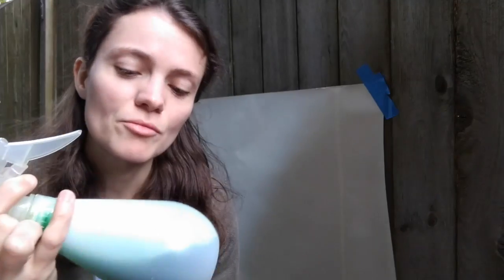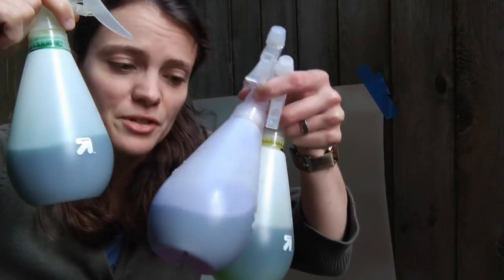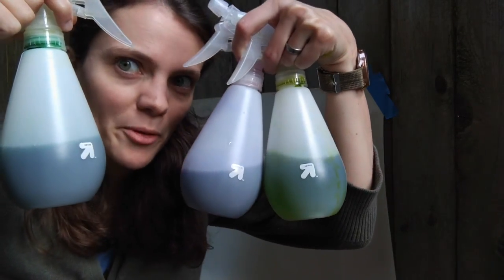Let's get started in setting up this project. I added liquid watercolors to my spray bottles, and you can add as much as you like. It depends on how intense the color you want. I have a couple different shades of green and a purple. We'll see what that pattern looks like once I get started.